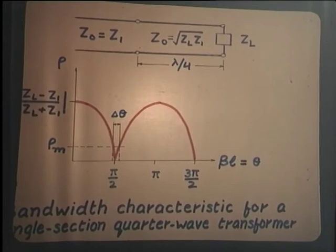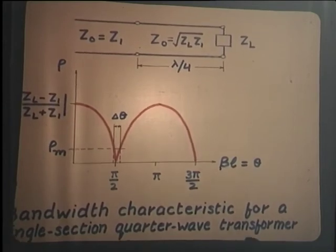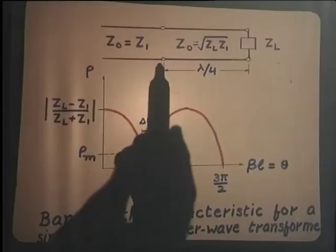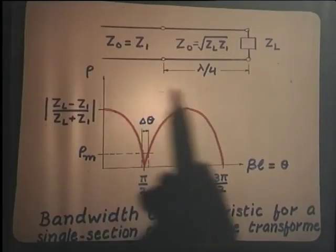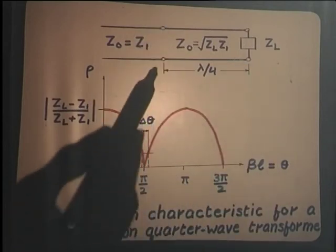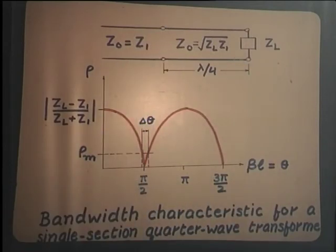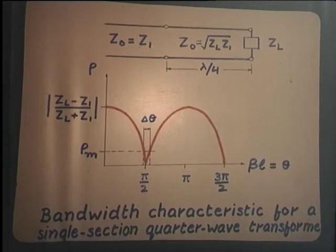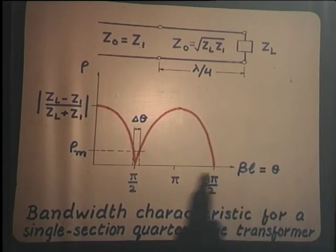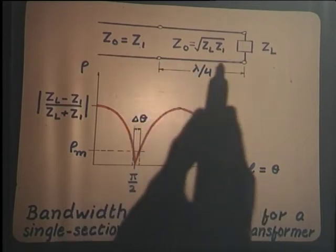One can go into the details and see how the reflection at one junction is cancelled by the reflection at the other junction, so that the overall net reflection at the input junction is zero. The x-axis represents the electrical length of the quarter-wave section, and at the design point the match is perfect.